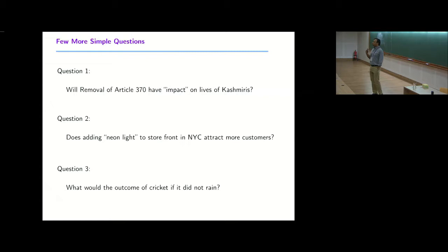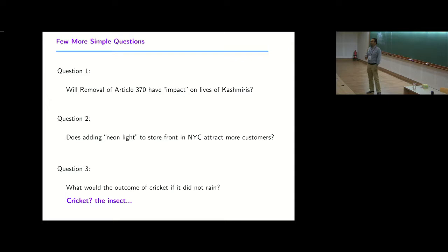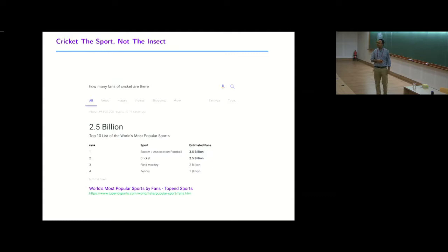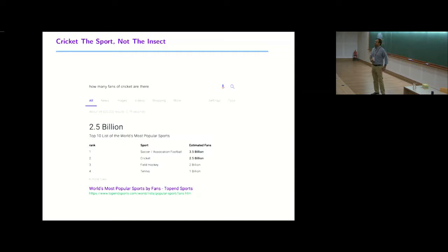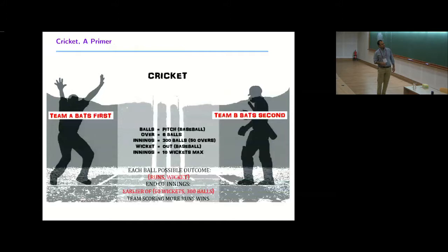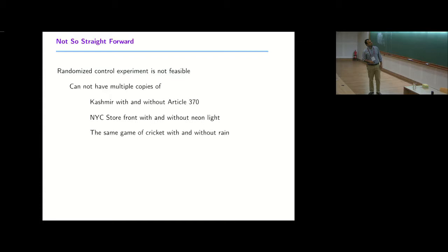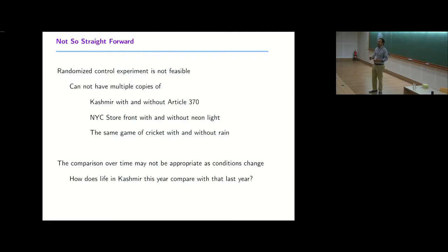In cricket, the Duckworth-Lewis method is an interesting causal inference problem: what if instead of these many overs I had those many overs to play? And so we can't do randomized control in many real-world settings. Difference-in-difference methods have fundamental issues and flaws.